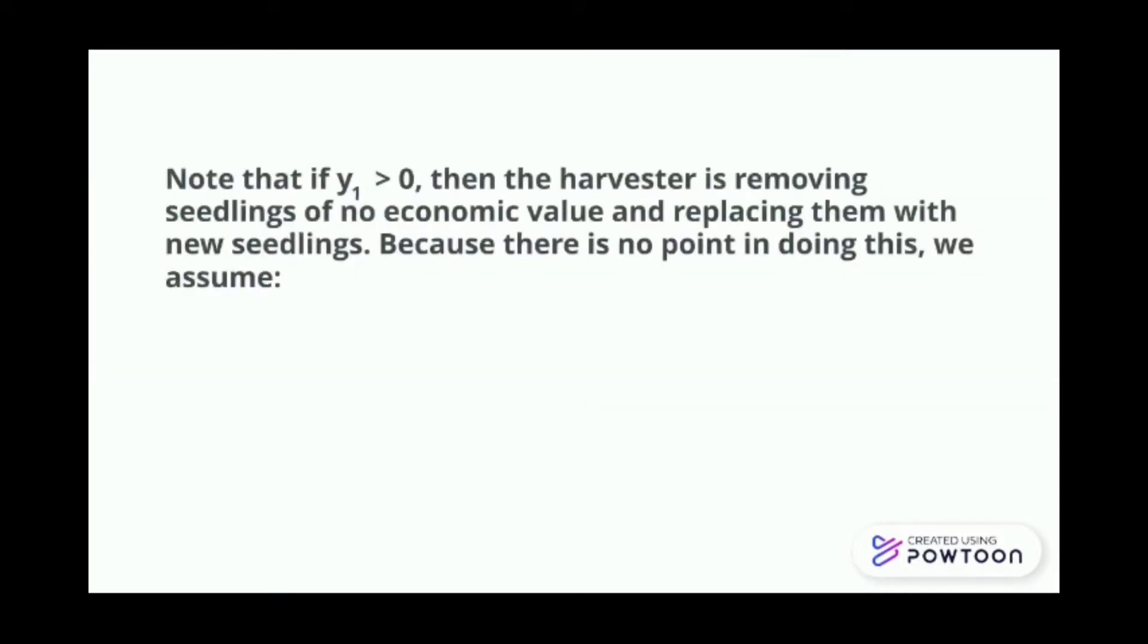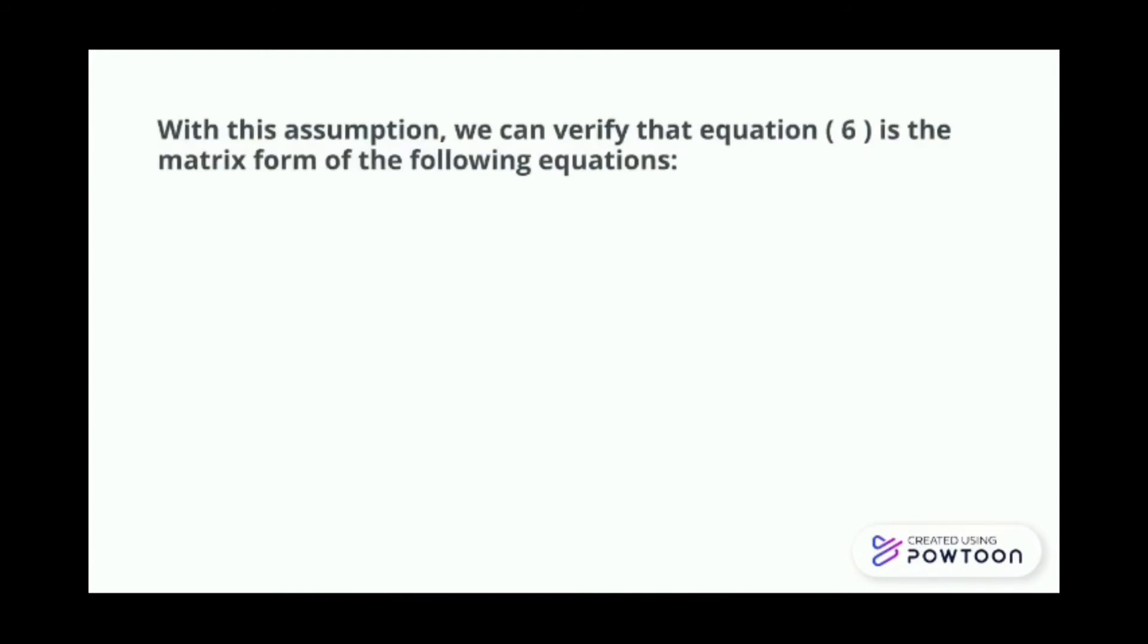Note that if y1 is larger than 0, then the harvester is removing seedlings of no economic value and replacing them with new seedlings. Because there is no point in doing this we assume y1 equals to 0. And we label this as equation 7. With this assumption, we can verify that equation 6 is the matrix of the following equations.